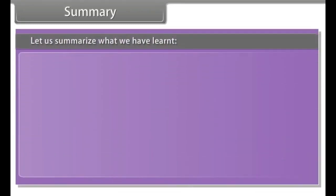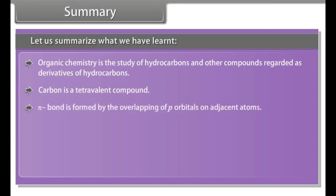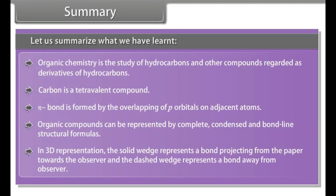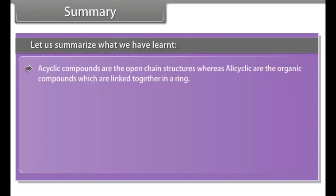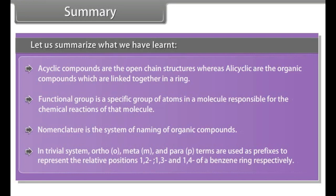Summary: organic chemistry is the study of hydrocarbons and other compounds regarded as derivatives of hydrocarbons. Carbon is a tetravalent element. Pi bond is formed by the overlapping of p orbitals on adjacent atoms. Organic compounds can be represented by complete, condensed, and bond line structural formulas. In 3D representation, the solid wedge represents a bond projecting toward the observer, and the dashed wedge represents a bond away from the observer. Acyclic compounds are open chain structures, whereas alicyclic compounds are linked together in a ring. Functional group is a specific group of atoms responsible for the chemical reactions of a molecule. Nomenclature is a system of naming organic compounds; in the trivial system, ortho, meta, and para terms are used.